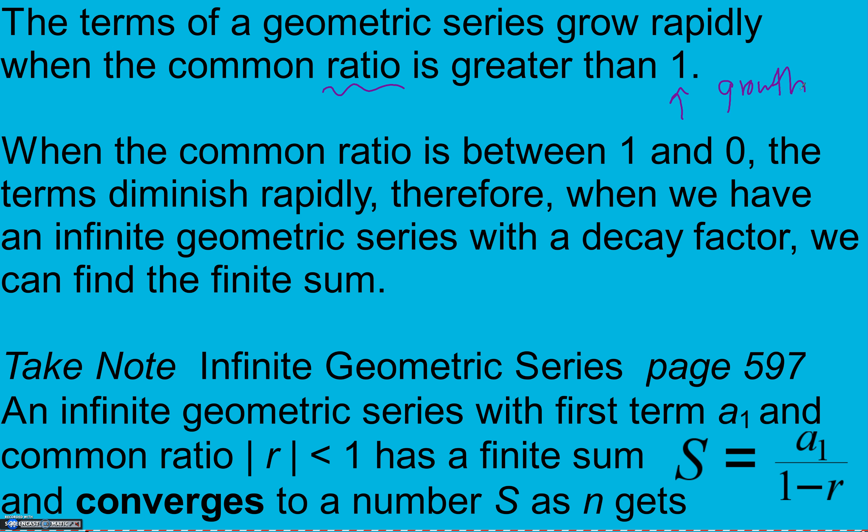When the common ratio is between 1 and 0, the terms diminish rapidly. Therefore, when we have an infinite geometric series with a decay factor, remember our common ratio between 0 and 1 gives us exponential decay, we can find the finite sum.